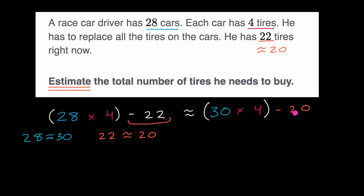And this computation right here is a lot easier to do in our head. Three times four is 12, so 30 times 4 is 120. So this part right over here is 120.